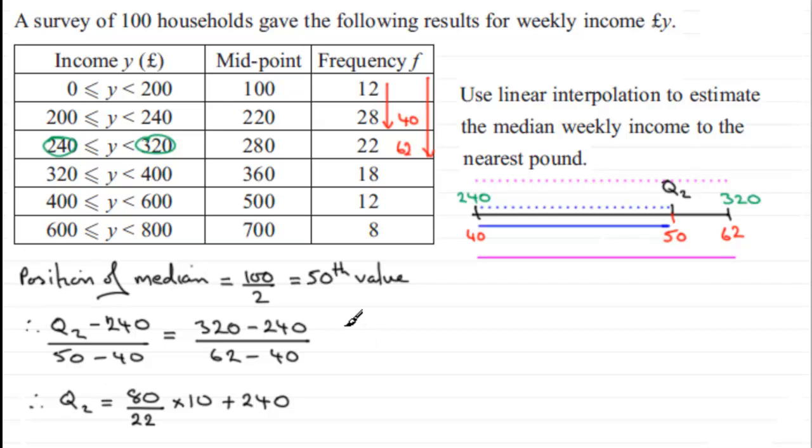Okay, so all I've got to do now is just work that out. If you do, you therefore end up with Q2 equaling 276.3636 and so on. And if we were to give our weekly income then to the nearest pound, Q2 represents the median, so I'm just going to write that as therefore the median equals 276 pounds.